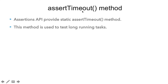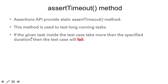Basically, we use assertTimeout in a test case to keep a check on performance-inefficient code. If you call a piece of code which you want to test as a task, this method will cause the test case to fail if the given task takes more than a specified duration. The method takes a duration in milliseconds or nanoseconds, and a piece of code to test — if that code takes more than the specified time, the test case will fail.